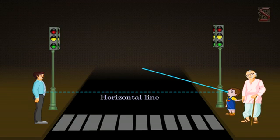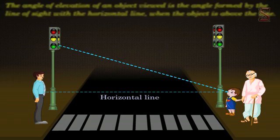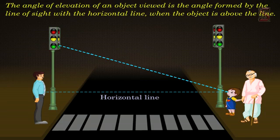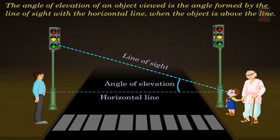If an object is above the horizontal line from our eyes, we have to raise our head to view the object. In this process, our eyes move through an angle formed by the line of sight and the horizontal line, which is called the angle of elevation.